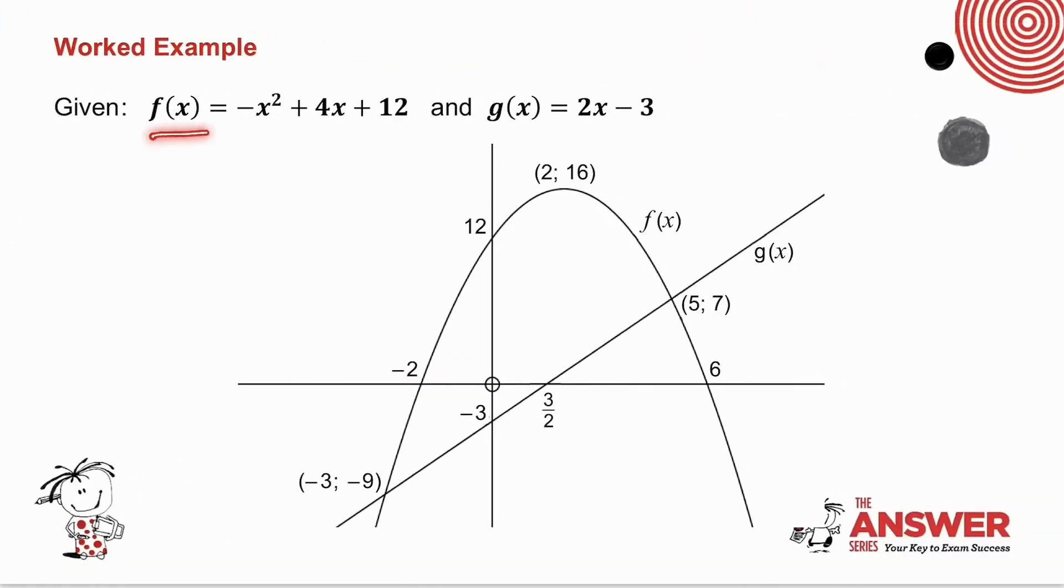I have given you a parabola and a straight line. I've given you the x-intercept, the y-intercept, and the turning point of the parabola, the x-intercept and the y-intercept of the straight line, and the coordinates of the points of intersection. Now we're going to use these two graphs and answer various questions on them.